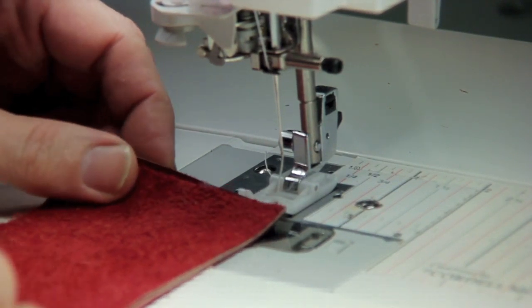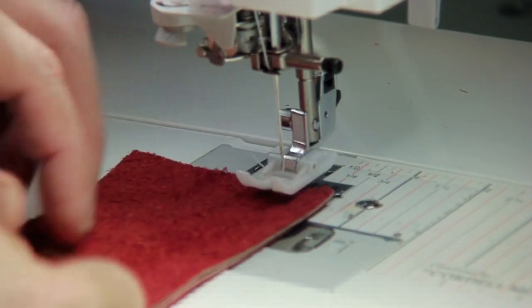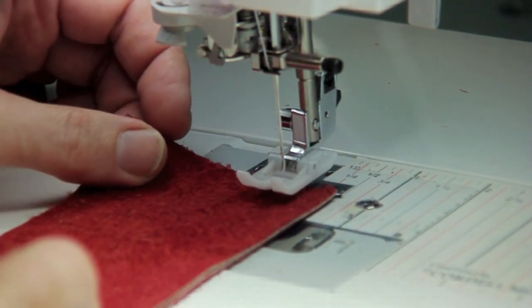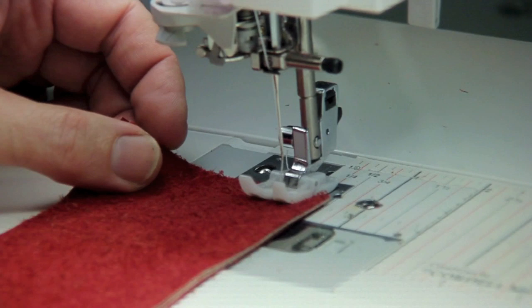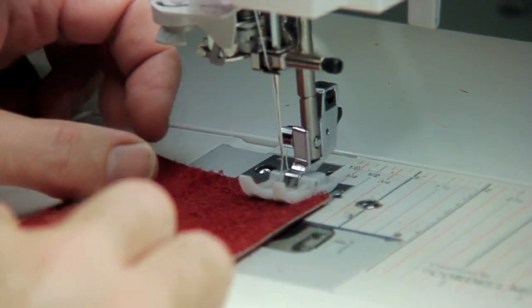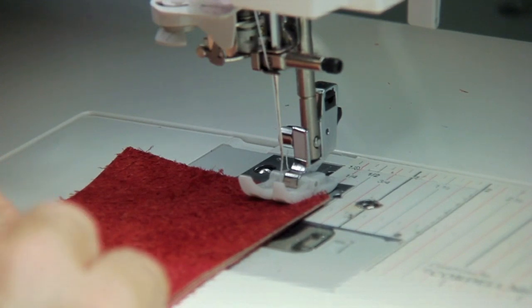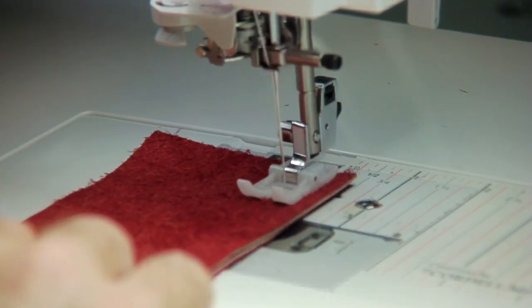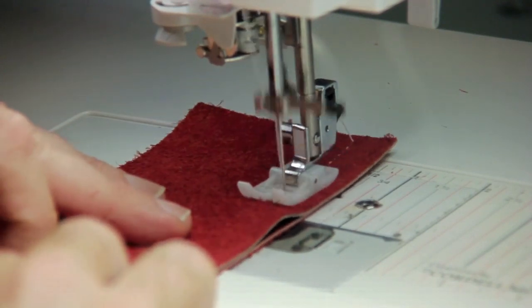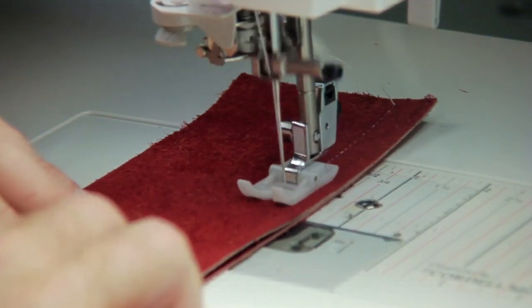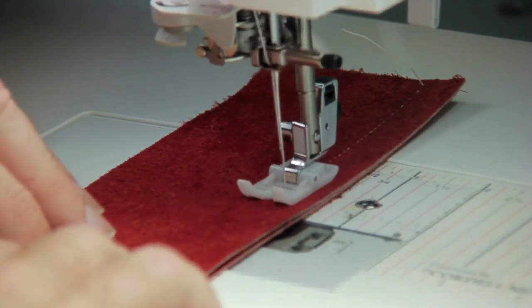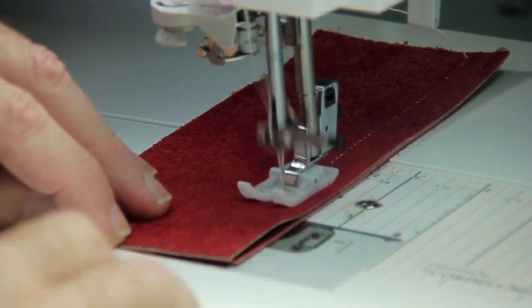When we sew on leather, you can see I've got two layers of outer weight leather here. We use a half inch seam allowance and we want our stitch length to be 3.0. Now, never sew fast on leather. Always test your leather. Different needle sizes will be dependent upon the density of your leather.